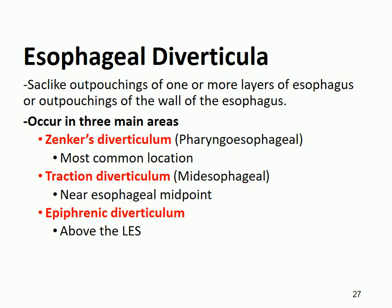The esophageal diverticulum can occur in three main areas. One can occur in the pharyngo-esophageal region, meaning between the pharynx and the esophagus, and this we call the Zenker's diverticulum. This is the most common location of esophageal diverticulum.